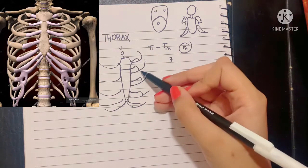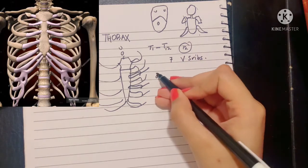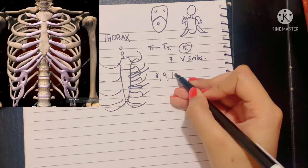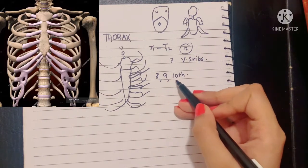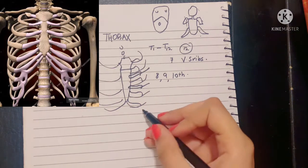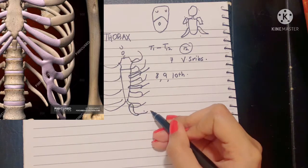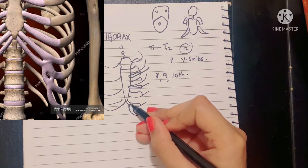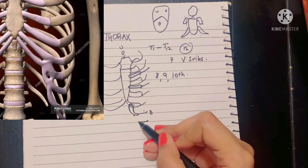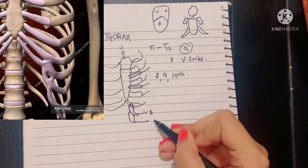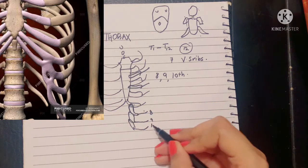The first seven ribs are the true ribs or the vertebrosternal ribs. While the 8th, 9th, 10th ribs are vertebrochondral ribs, and why? Because the 8th, 9th, and 10th ribs are not connected to the sternum directly. Their costal cartilages are linked up to the higher ribs. So if this is the 8th rib, its costal cartilage is connected to the costal cartilage of the 7th rib, and so on. The 9th connects to the 8th and 10th connects to the 9th.